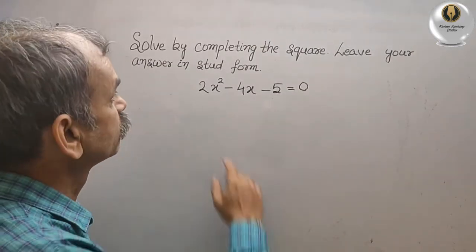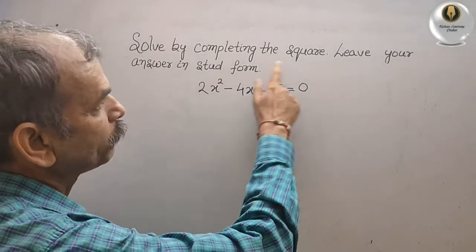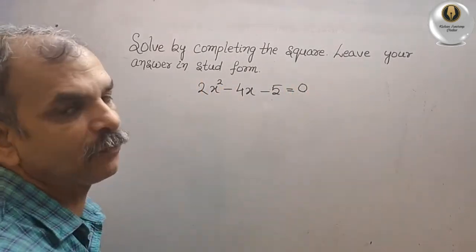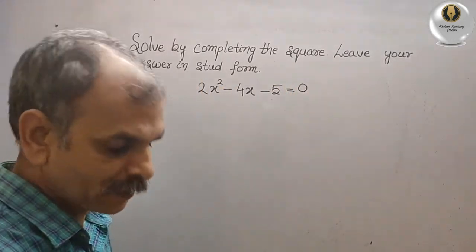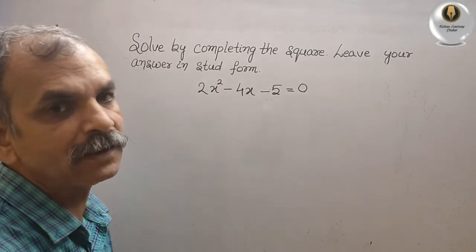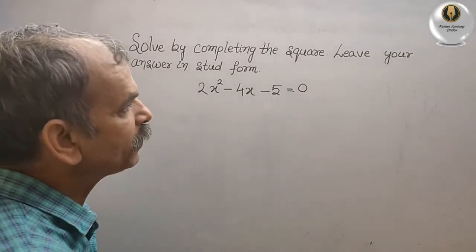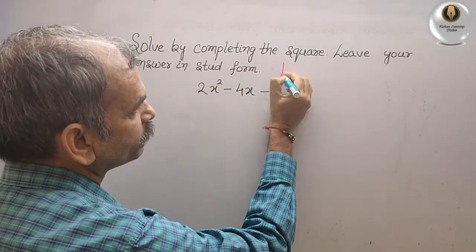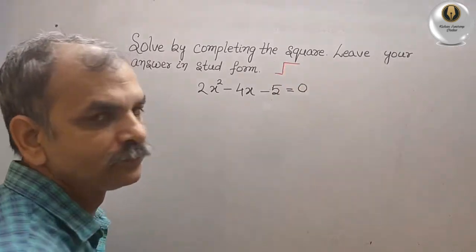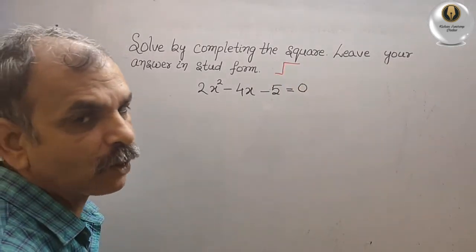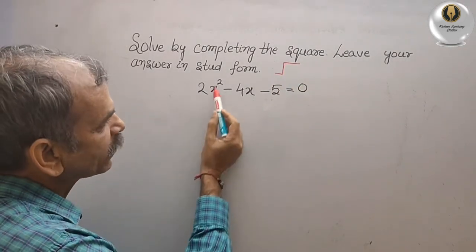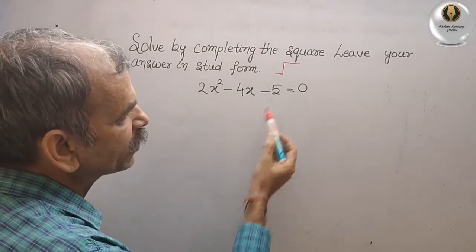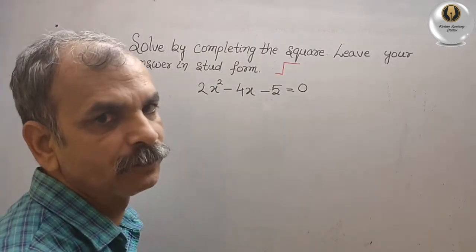Your question is: solve by completing the square, leave your answer in surd form. Surd form means square root form — that means in this form. What they are given is 2x squared minus 4x minus 5 equals 0.